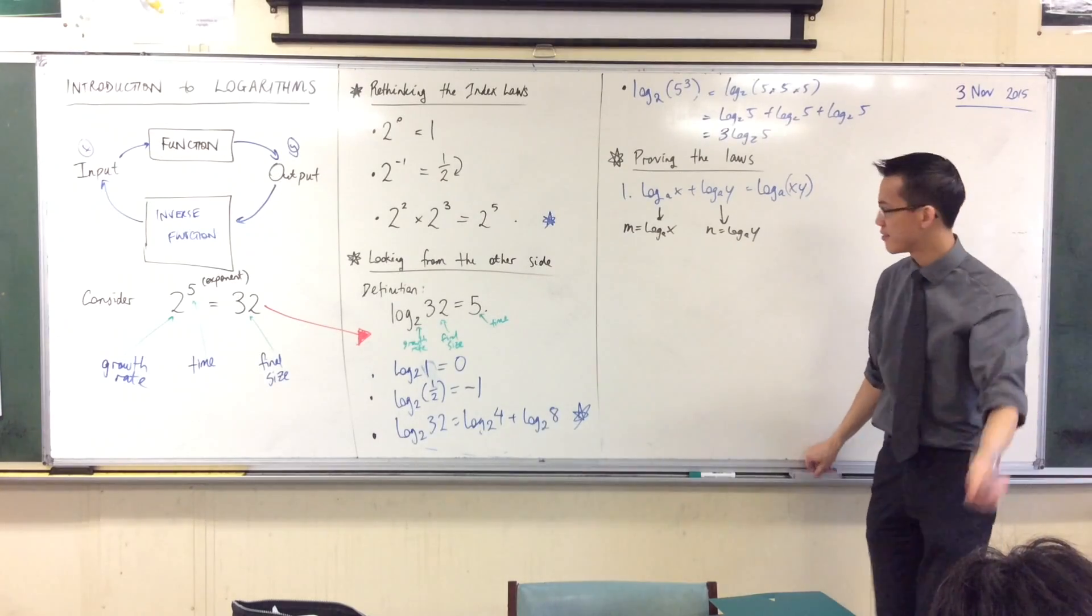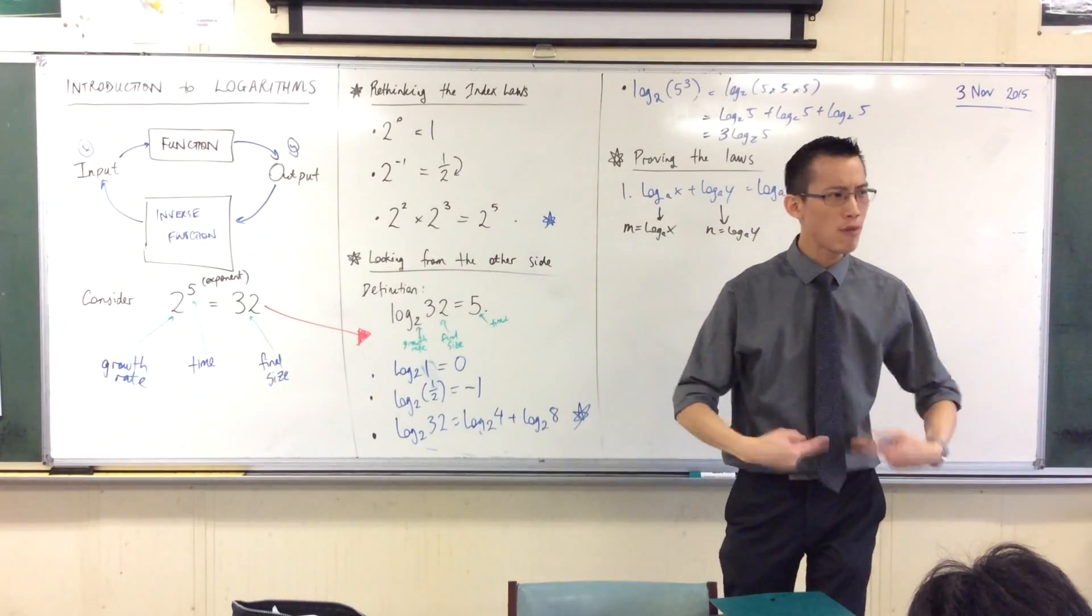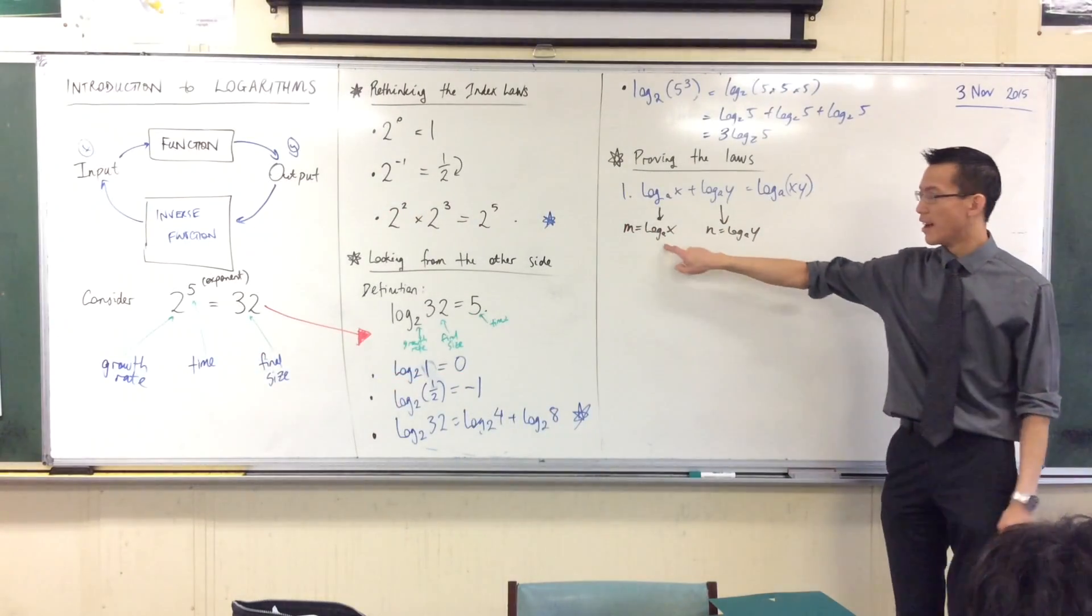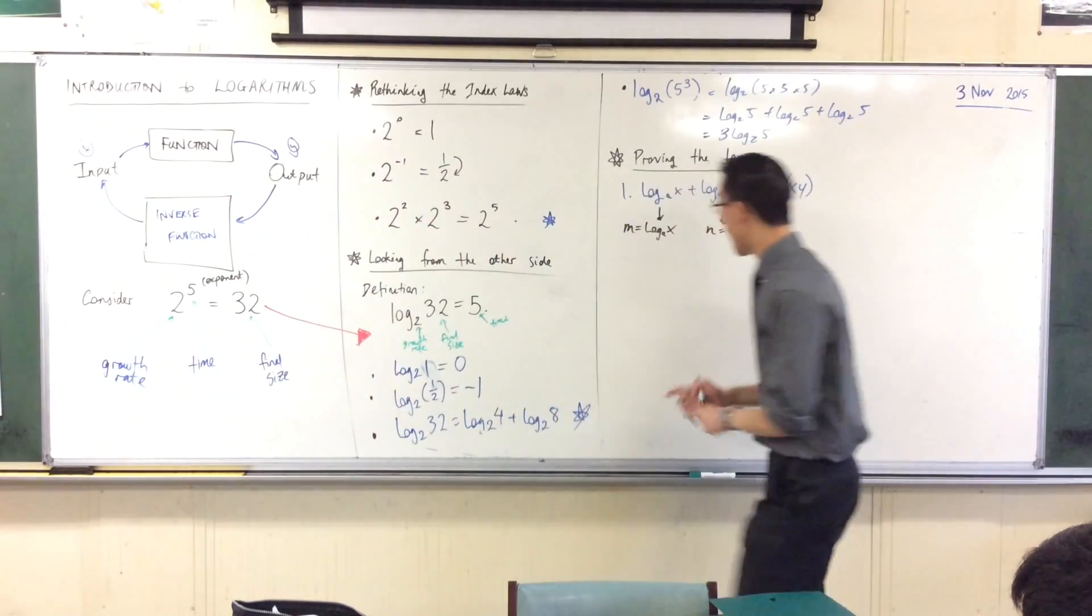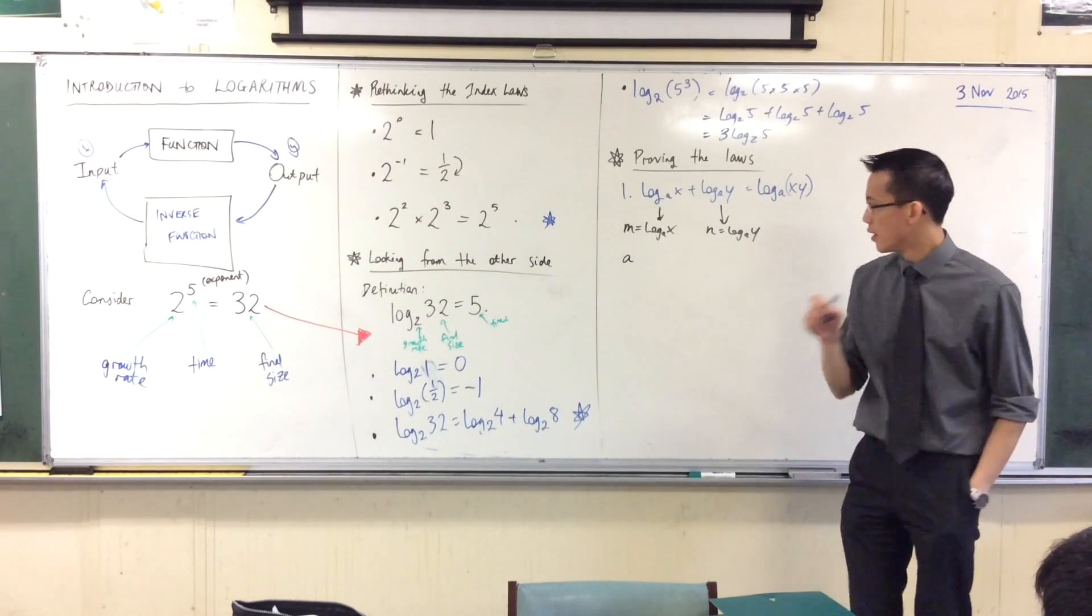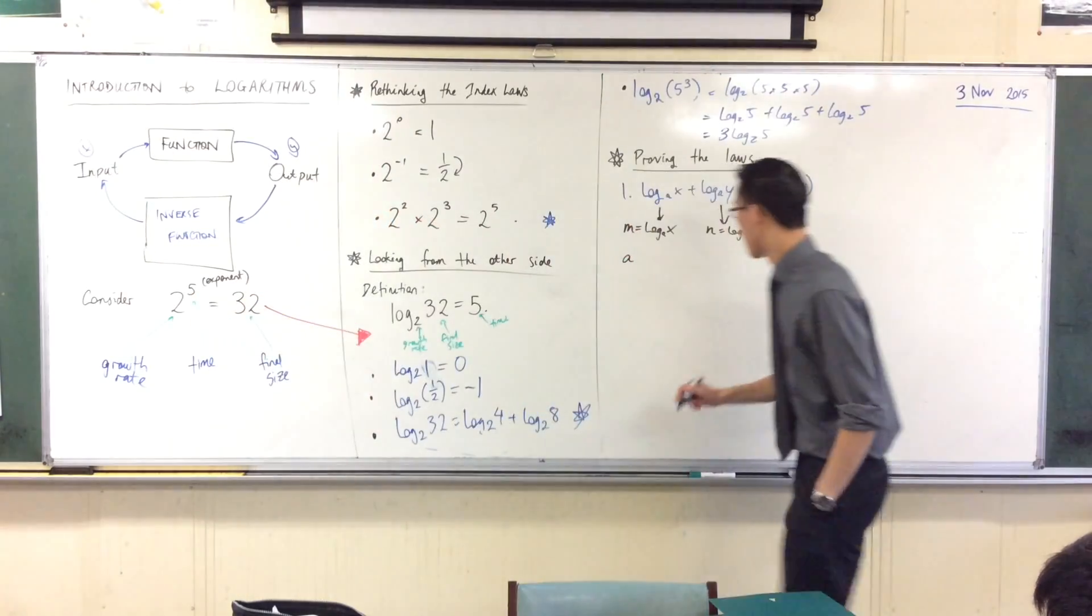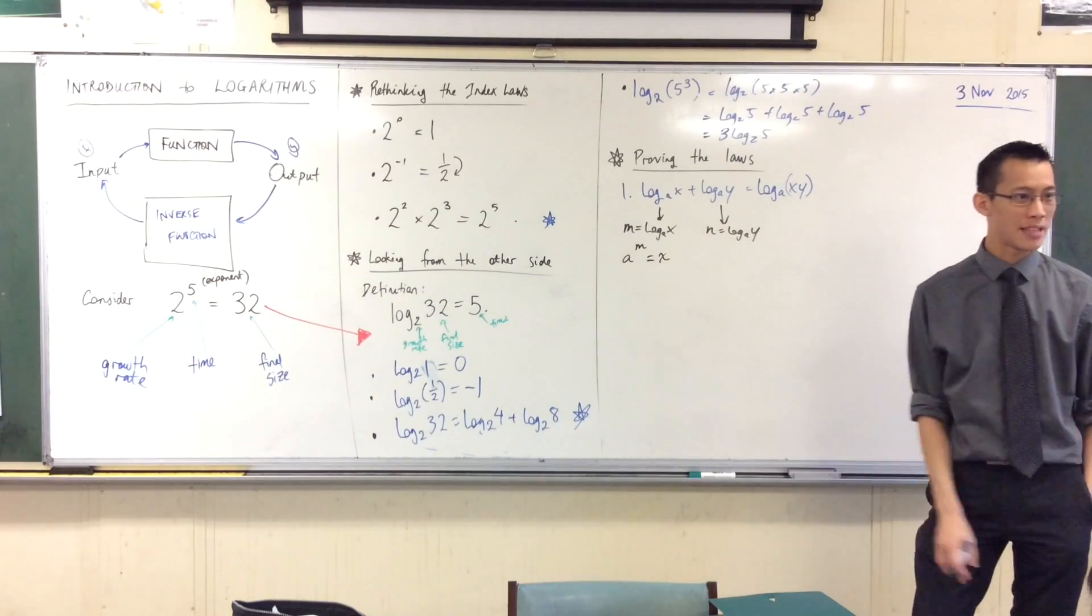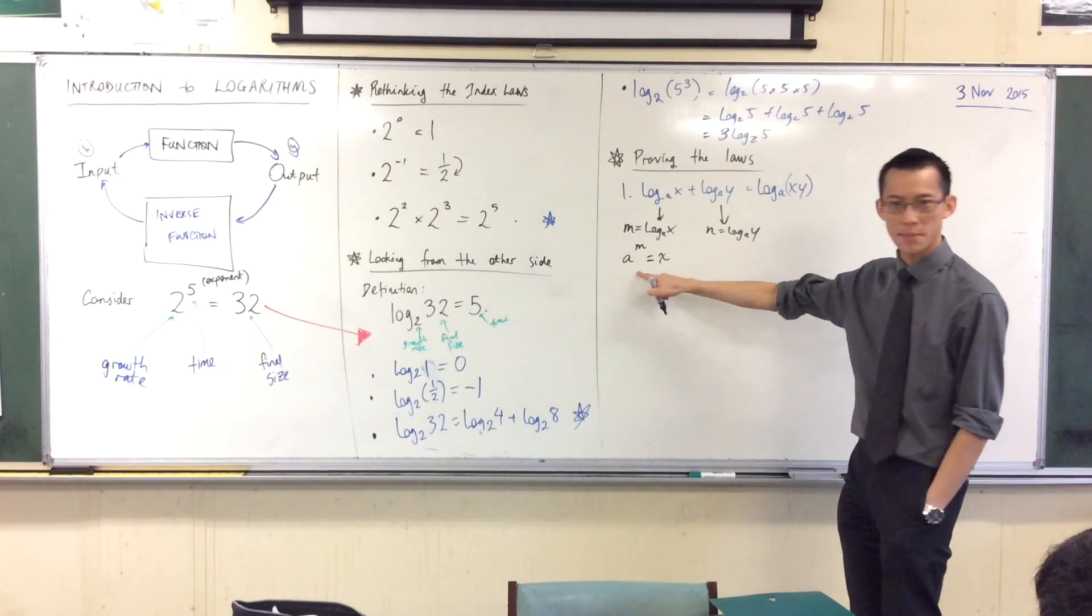Okay, so by definition, if I'm writing this log equation, just like this one, how can I rewrite it as an exponential? Someone help me out. Notice the bases. The bases here, two, are the same as the base over here. So I can write the statement a to the power of, now where does the M go? The M is over here, which really should belong in the index. Do you see that? So I'm going to put M up there where we're used to it. And that's equal to your last number. Does that make sense?